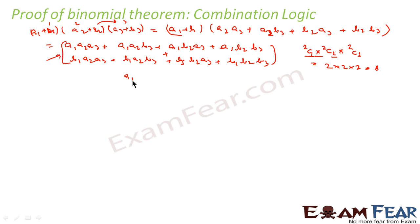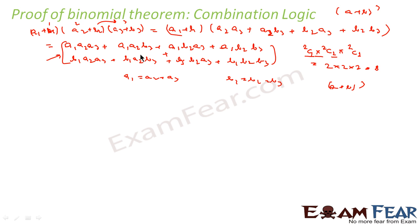So let's assume now a1 = a2 = a3 and b1 = b2 = b3, because we wanted to find (a + b)³. That was our intention. Just to explain that there is a combination pattern involved, I made separate a1, b1, a2, b2, a3, b3. So if you solve this, it becomes a³ + 3a²b + 3ab² + b³.